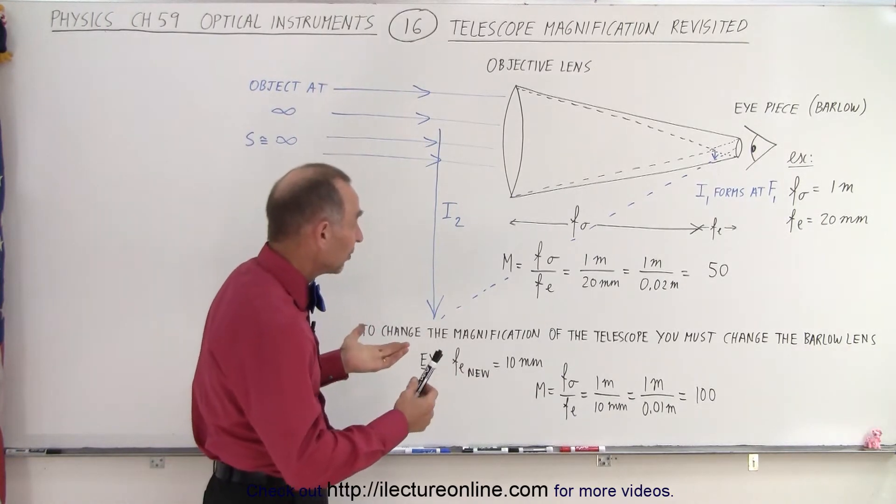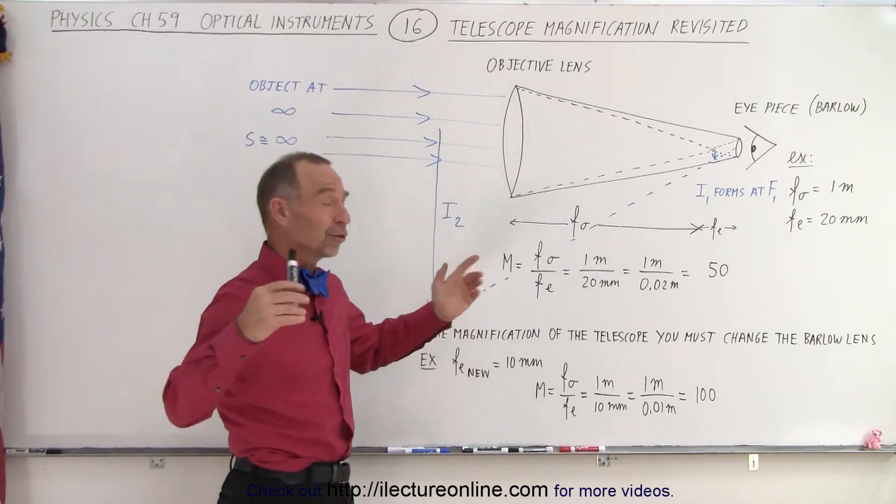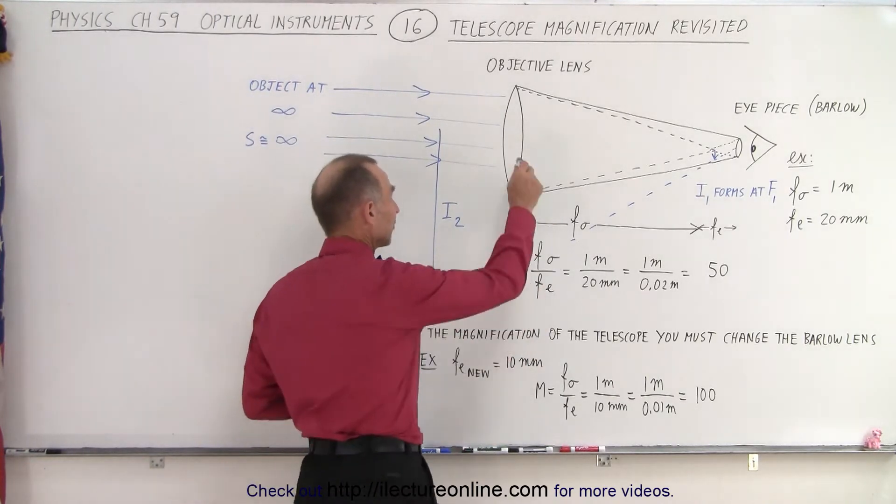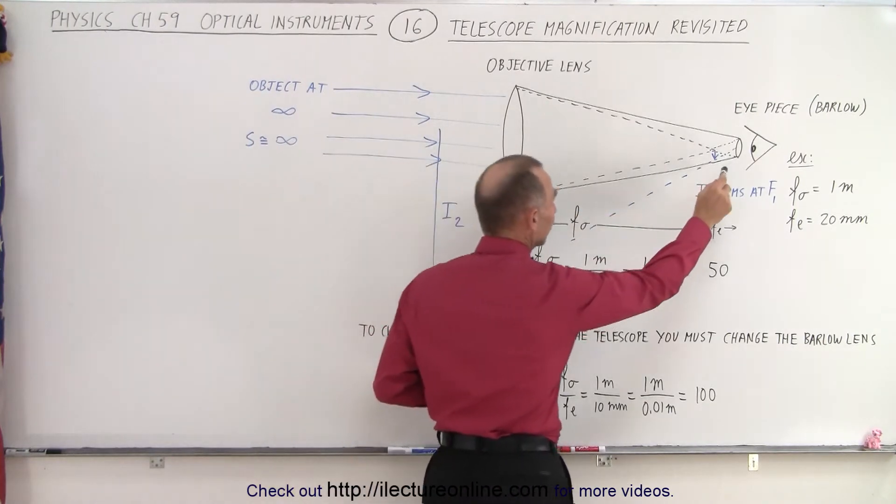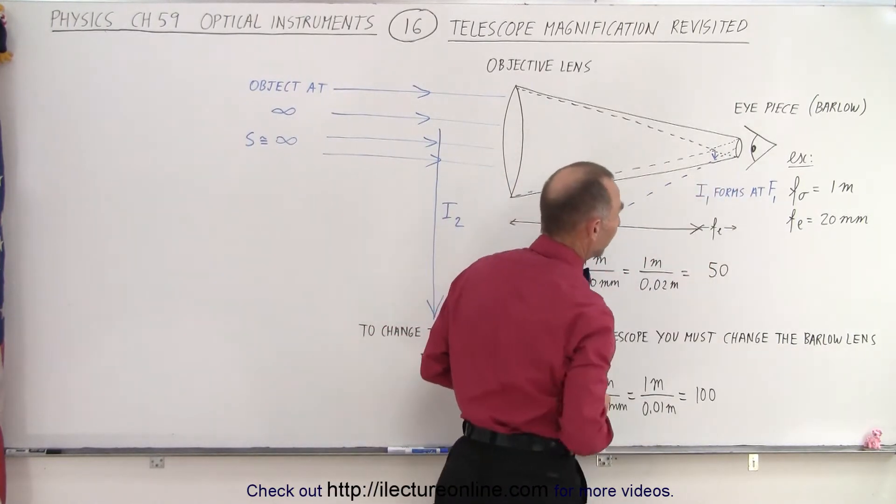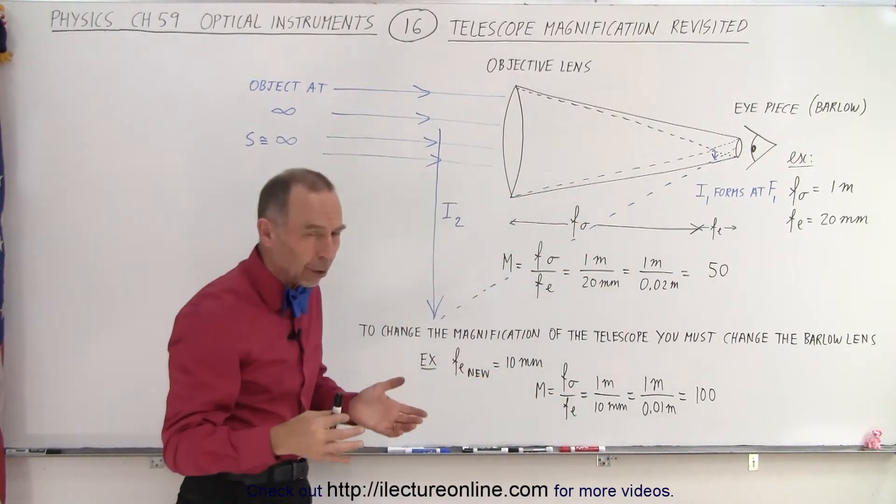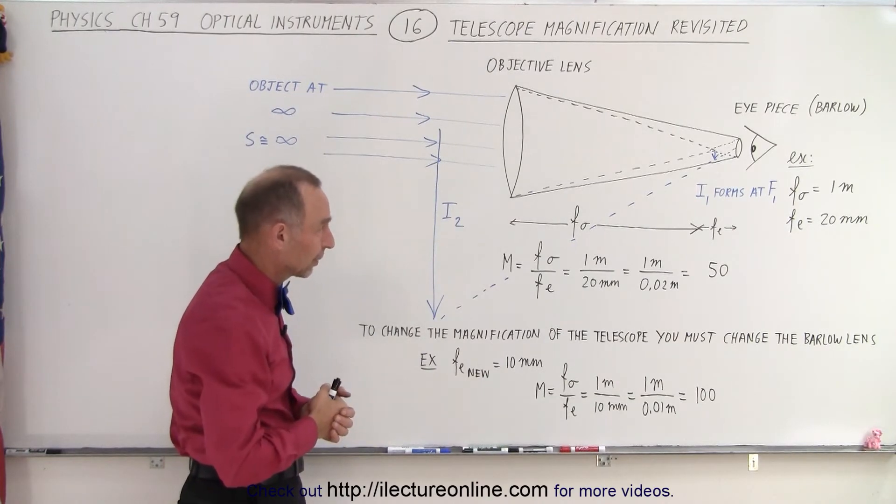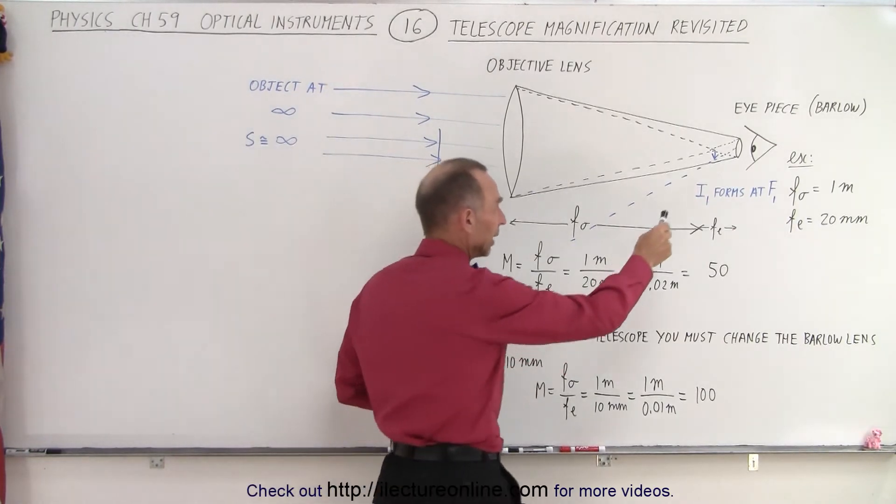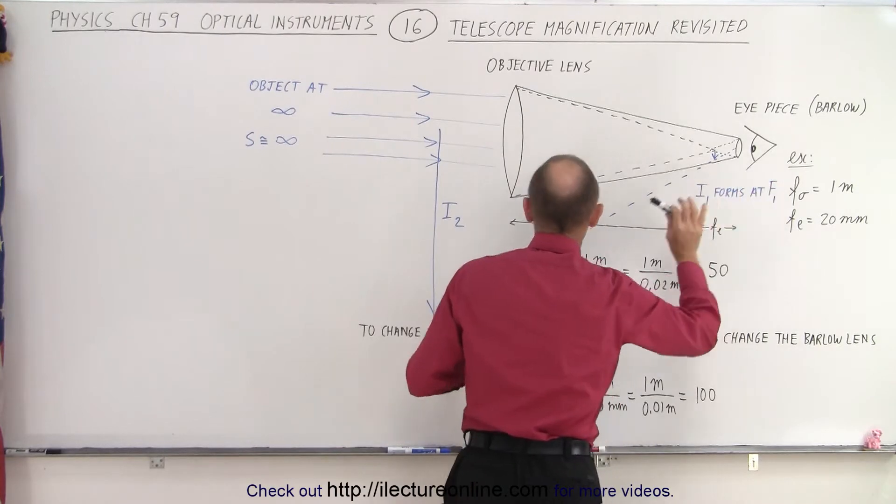A telescope kind of looks like a big microscope but there's some major differences. In the front you still have an objective lens, in the back you still have an eyepiece. In the case of the telescope we call the eyepiece the Barlow or the Barlow lens. We tend to look through the Barlow lens and the way you see the image is as follows.